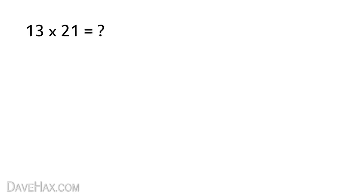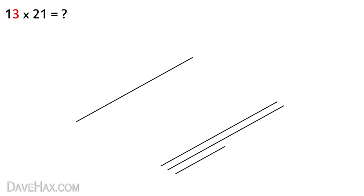As we can see, the first digit in this equation is 1, which means we draw one straight line diagonally like this. The next digit is 3, so we leave a little space then draw three lines parallel to the first one like this.